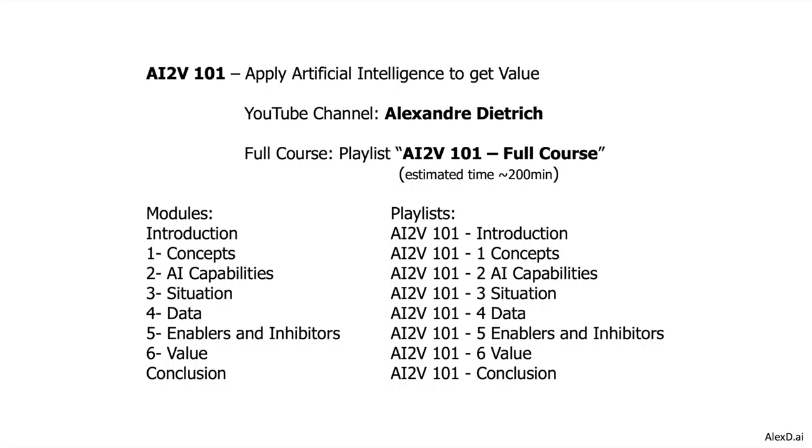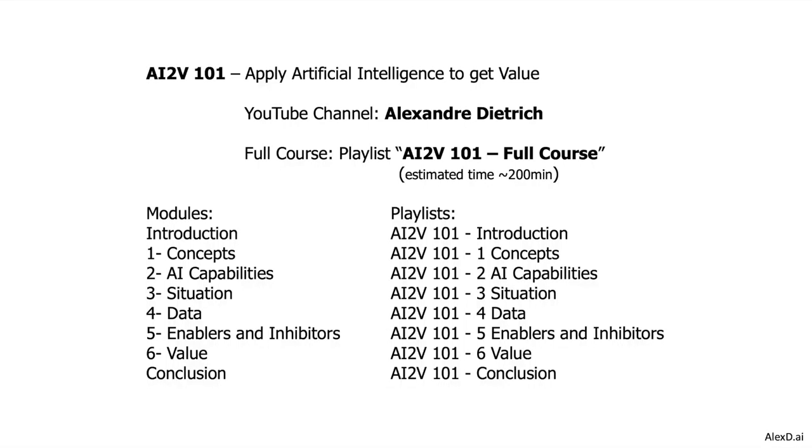If you want to access the full course, there's a playlist called AI2V101 Full Course, and all 48 videos will play one after another if you use that playlist. I estimate that it will take you more than 3 hours to get through all the videos.